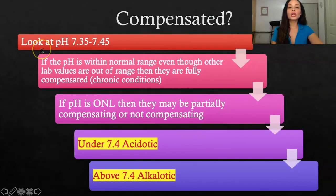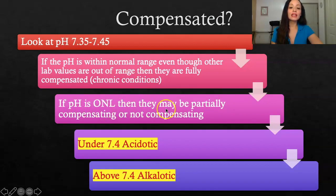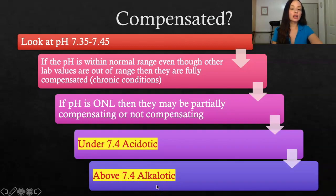In order to determine if something is compensated, you want to look at the pH. Normal pH should be between 7.35 and 7.45. If the pH is within normal range even though other lab values are out of range, then they are going to be fully compensated — meaning the body has had time to catch up, or it's a chronic condition. If the pH is outside of normal limits, they may be partially compensating or not compensating at all. Another key point: if it's under 7.4 then they are acidic; if they are above 7.4 then it's alkalotic.